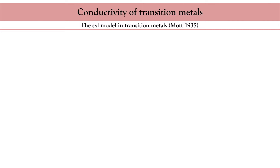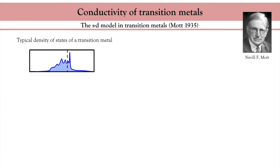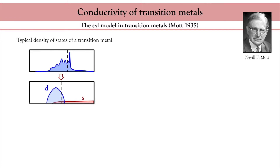In the 1930s, it was realized that many metals, particularly transition metals, did not obey either of these rules. Among the many issues, their resistivity was much larger than expected from Drude theory. The solution was suggested by Mott in 1935. In transition metals like vanadium, nickel, or palladium, both S, P, and D electrons are present at the Fermi level. Mott proposed to categorize Fermi electrons into two main classes: S-like electrons with high velocity and small density of states, and D-like electrons with low velocity but high density of states.